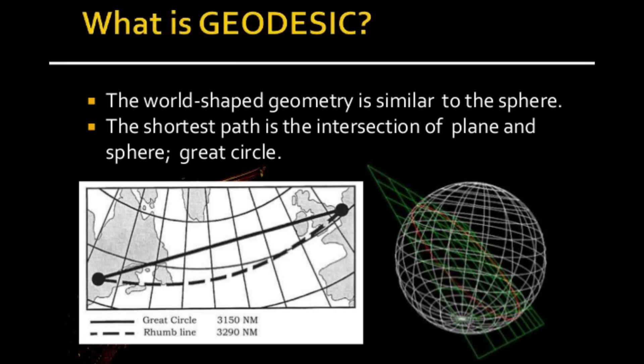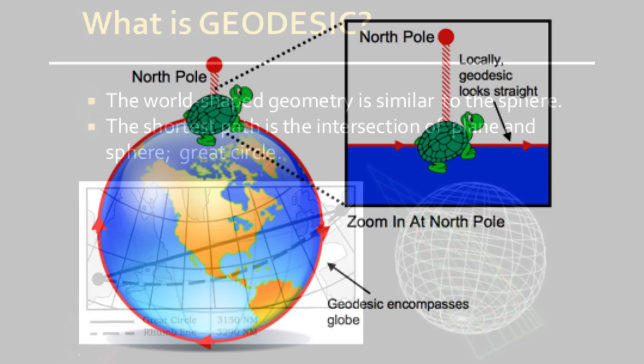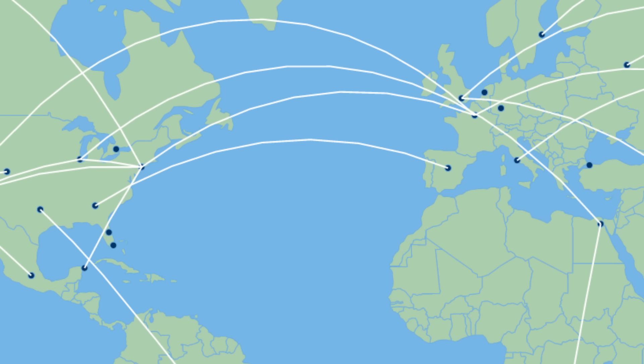Next up, geodesics are curves representing the shortest path between two points on a curved surface. These are what an ant living on the surface would perceive to be straight, and it explains why airplane routes on a map are curved a little. These are of huge importance for Einstein's general theory of relativity.